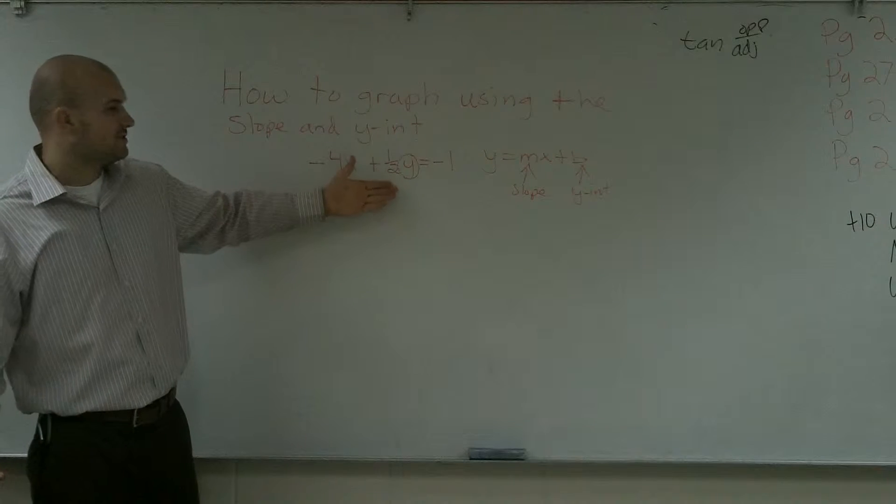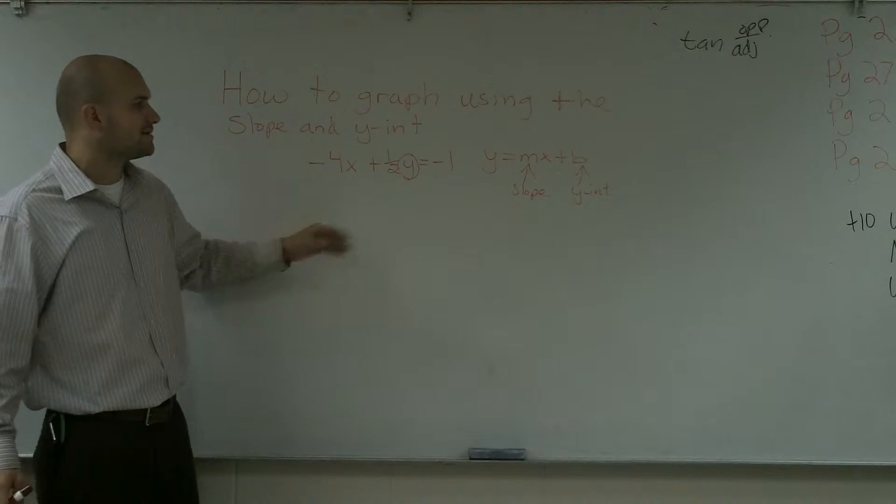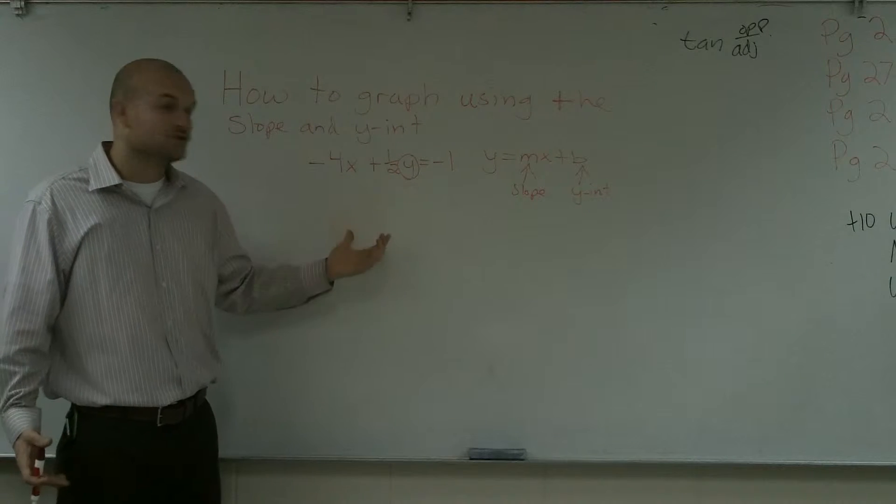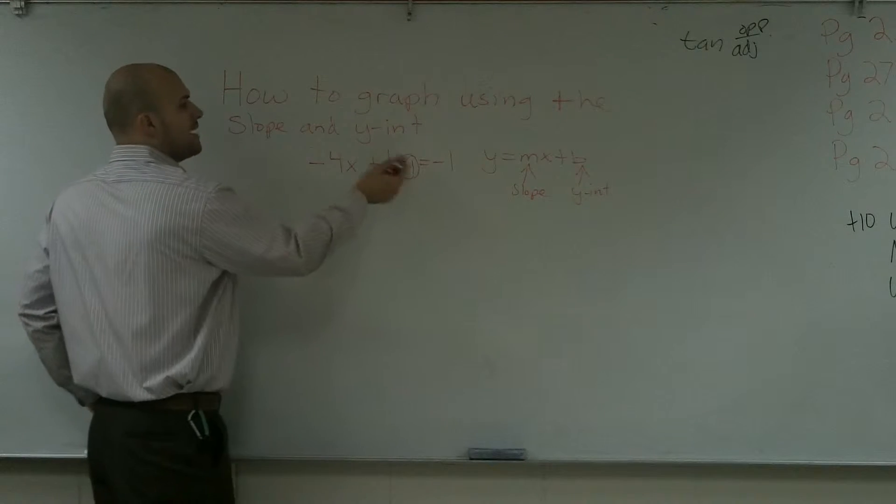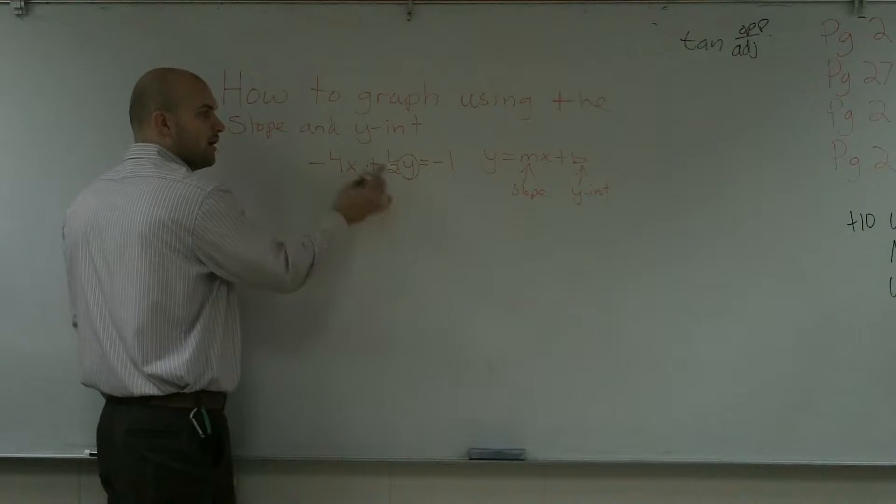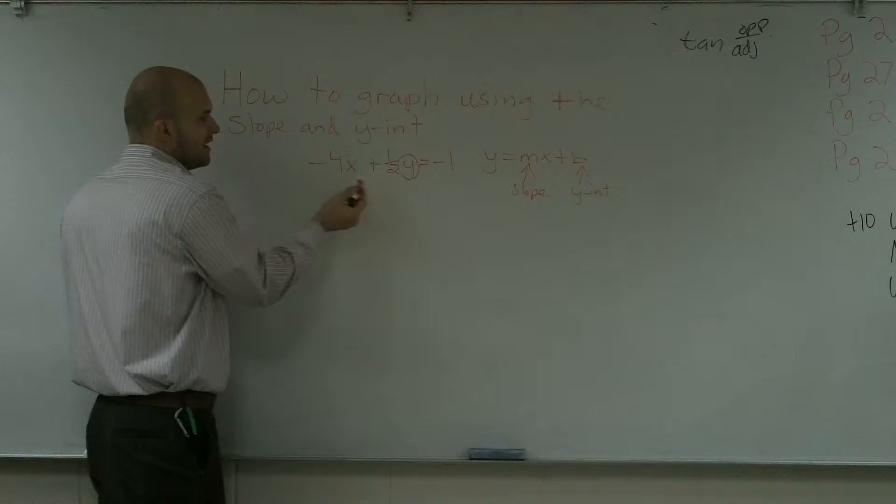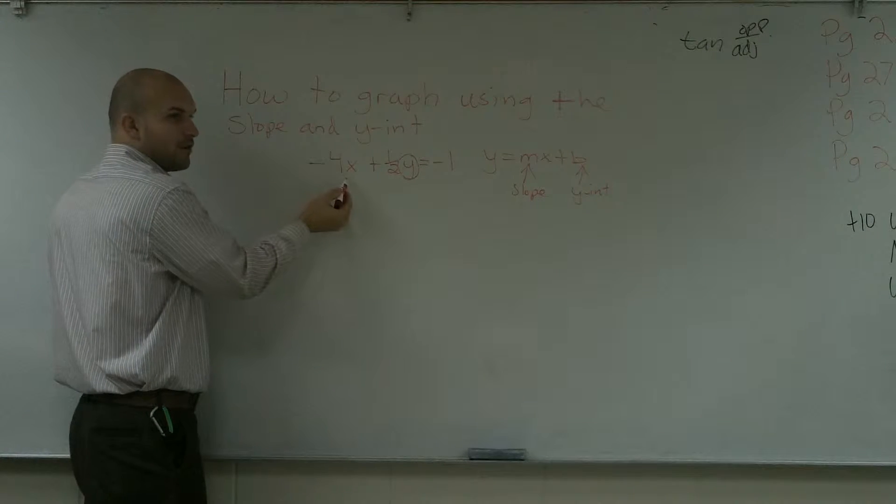So over here, obviously, we do not have it in that format. So the first thing I'm going to have to do is find out what's happened to my y and undo those operations. So I circled my y and I say, what's happened to it? Well, it's being multiplied by 1 half, and it's also being added by a negative 4x.